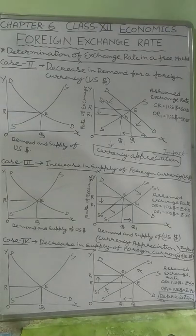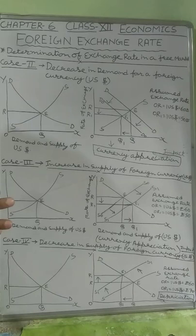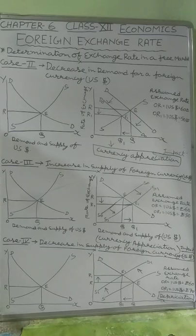Good morning students of Saraswati Vidya Mandir. In economics, we are in Chapter 6 Foreign Exchange Rate. Before this video, we discussed the fixation or determination of exchange rate in a free international money market — how exchange rate was determined. In a free international money market, exchange rate was decided on the basis of market forces, demand and supply forces, where demand for foreign currency and supply of foreign currency intersect each other. At that point, the equilibrium exchange rate was decided.